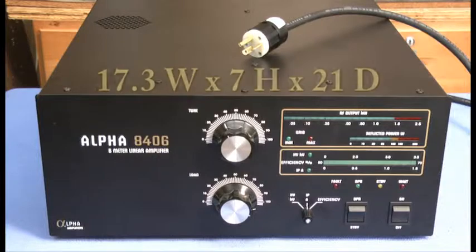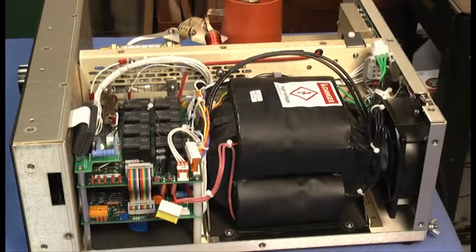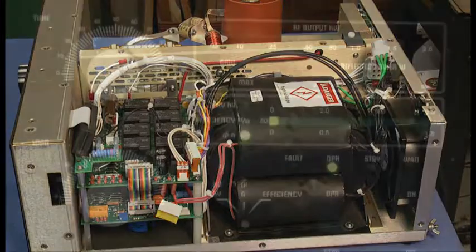The 8406 is 17.3 inches wide by 7 inches high by 21 inches deep. The complete amplifier weighs 70 pounds with a transformer making up 40 of those pounds.